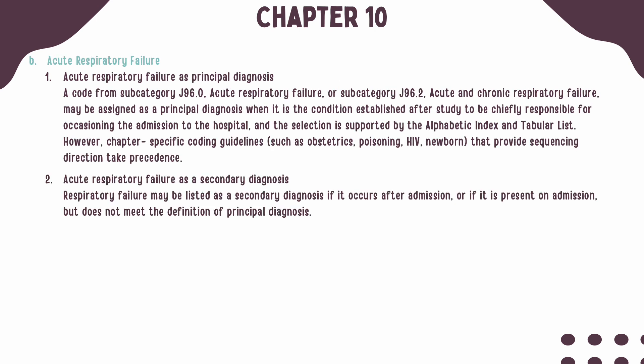Next, we have acute respiratory failure. Acute respiratory failure, or subcategory J96.0 or J96.2, can be assigned as a principal diagnosis when it is established to be chiefly responsible for the admission to the hospital or for the encounter. However, remember that if there are chapter-specific guidelines that provide sequencing instructions — such as for obstetrics, HIV, or poisoning — those will take precedence and should be followed.